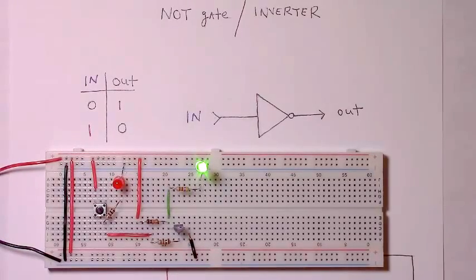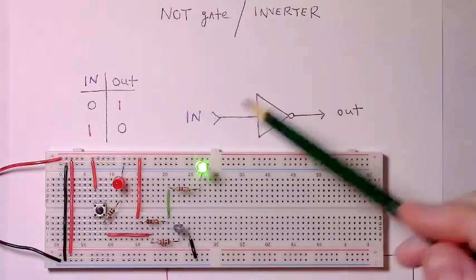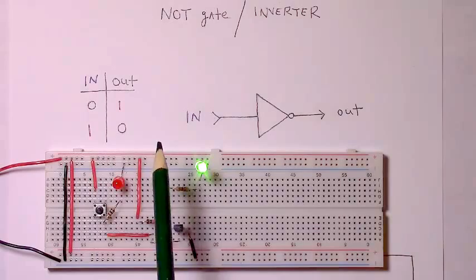Welcome to another circuit assembly tutorial. In this video we'll be building a NOT gate or inverter, logical inverter. The way a NOT gate works, we can just look at its input-output or truth table.